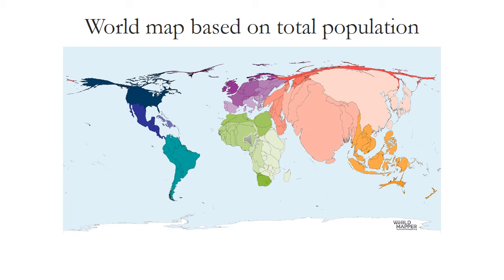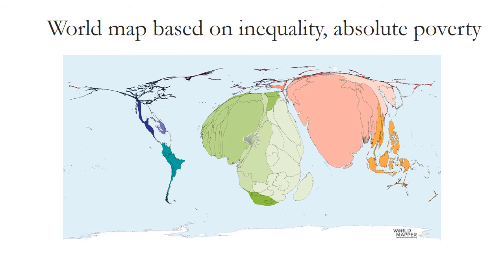Here is a map of the world based on population. Again, the shapes differ from what we are used to see. And here is one of the most shocking representations of our world. This is a map based on inequality and absolute poverty. It looks very different from what we are used to see.